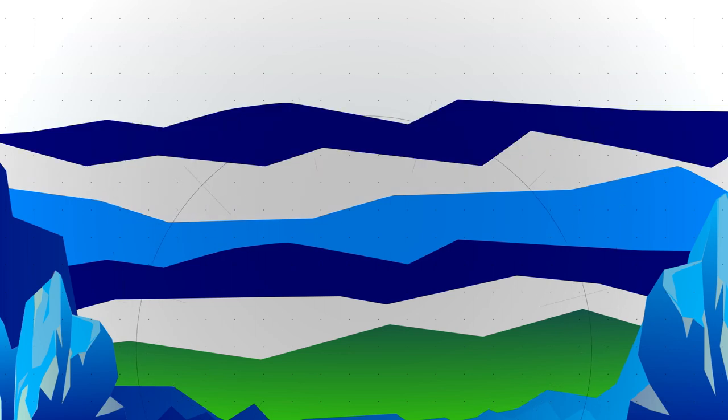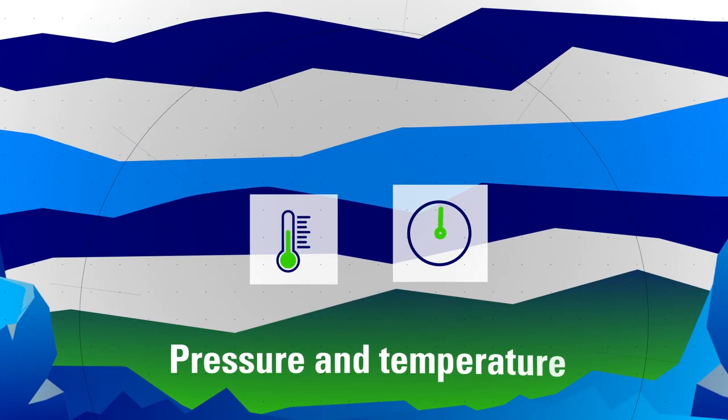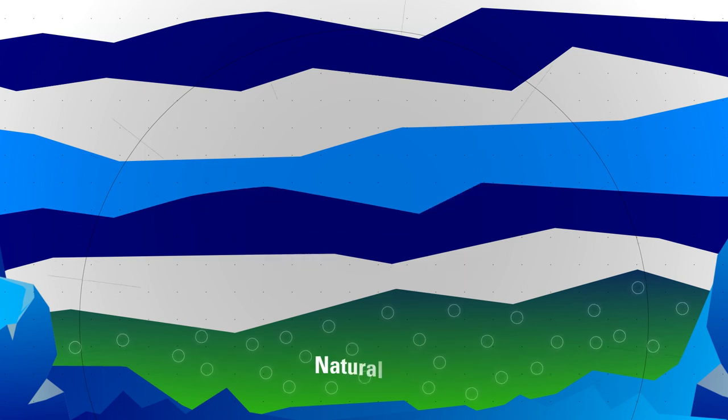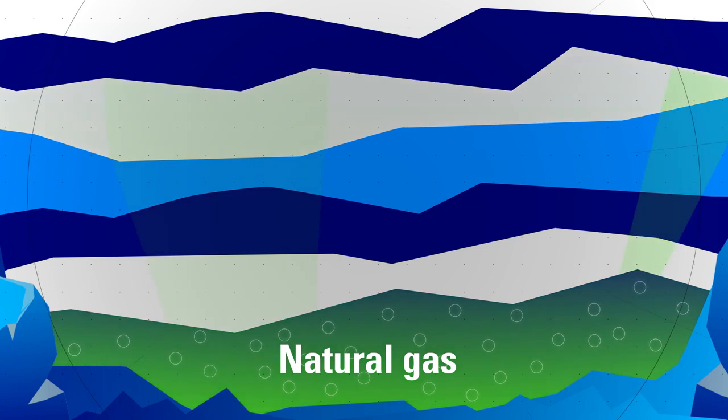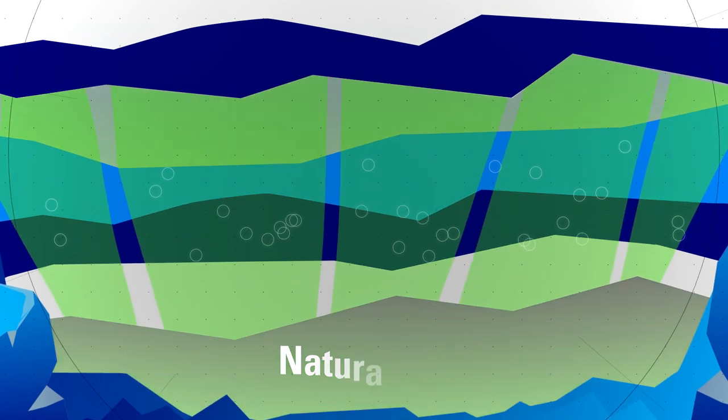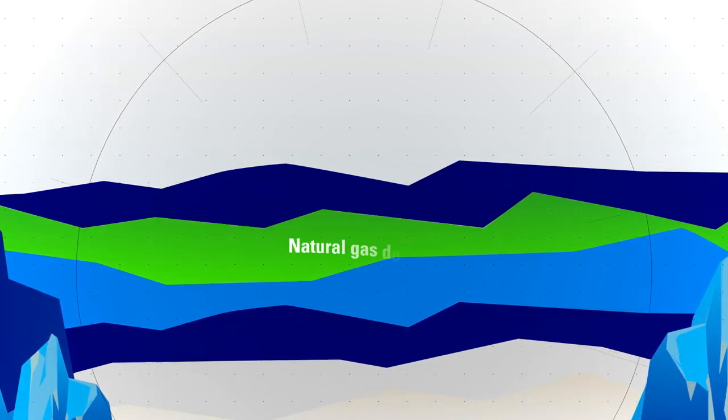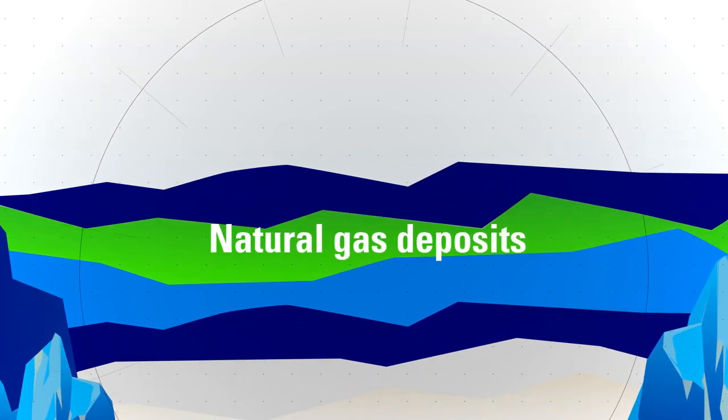This meant the organic layer was exposed to ever greater pressure and temperatures. This triggered a chemical reaction that eventually produced natural gas. This gas migrated towards the surface until it encountered impermeable layers where it collected, forming the natural gas deposits that we draw from today.